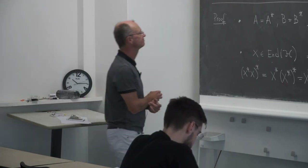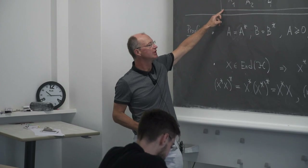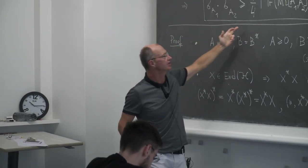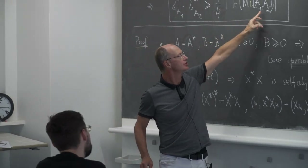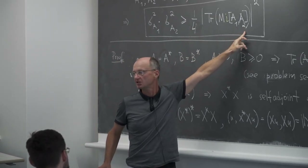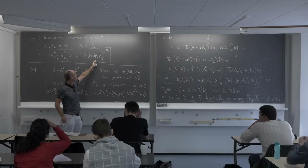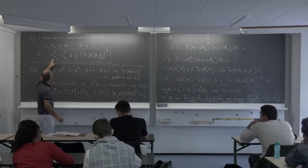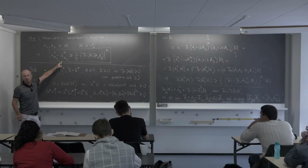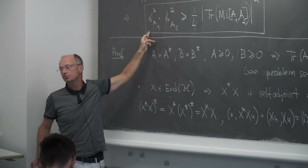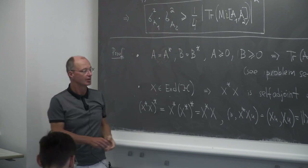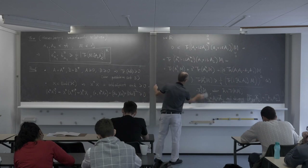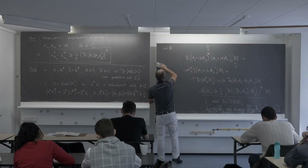What does this inequality say? It says that potentially, if the commutator [A₁, A₂] is non-vanishing, then — still depending on the state — the product of variances cannot be zero.